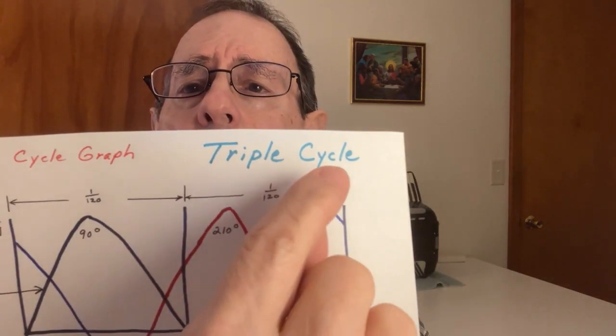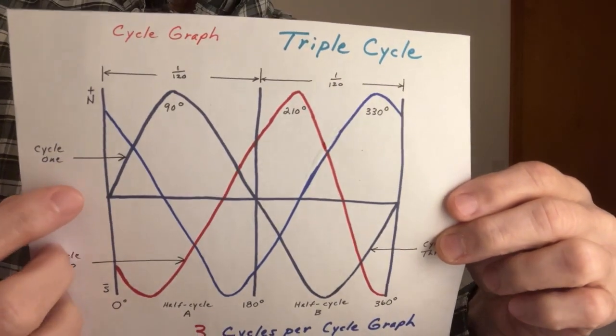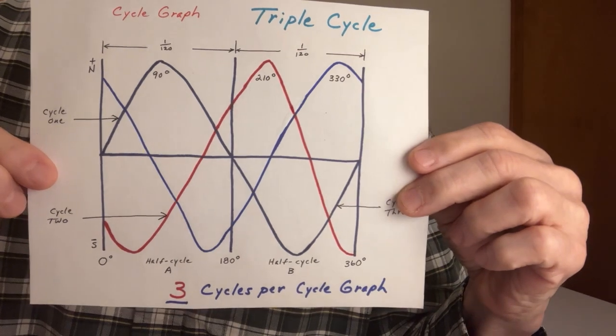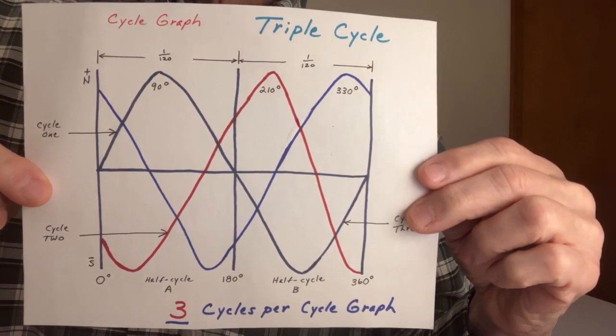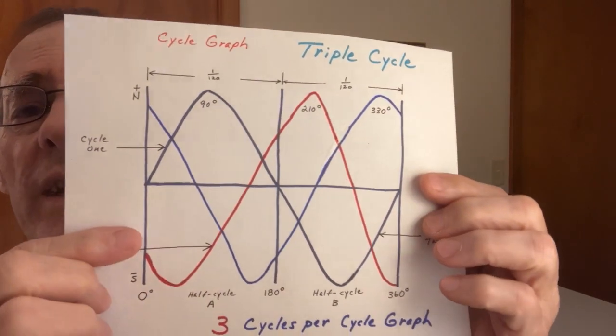So in the so-called three phase, you actually have three cycles. It's triple cycle service. Look at your cycle graph - this shows one revolution of a generator that creates triple cycle service. This graph shows one revolution and you see three cycles per graph, three not just one. Now they say that phases are out of phase, and they go on and on in your school books and classrooms where they teach electricity, but these cycles are offset. They are not out of phase.